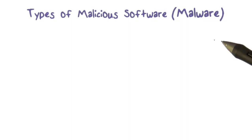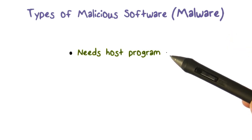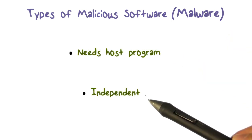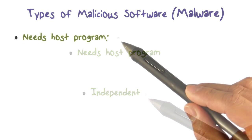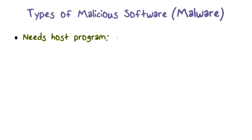There are two major types of malware. The first kind of malware needs a host program. The second type of malware is independent. There are several ways for malware to embed itself into a program.